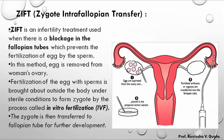The second technique is ZIFT — Zygote Intra-Fallopian Transfer. In this technique, the zygote is transferred into the fallopian tube.